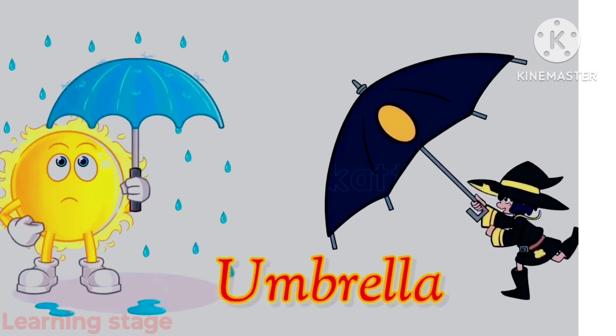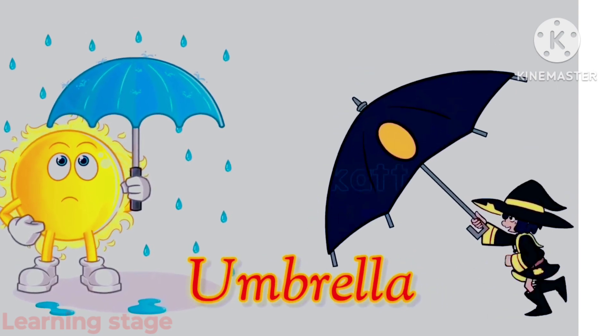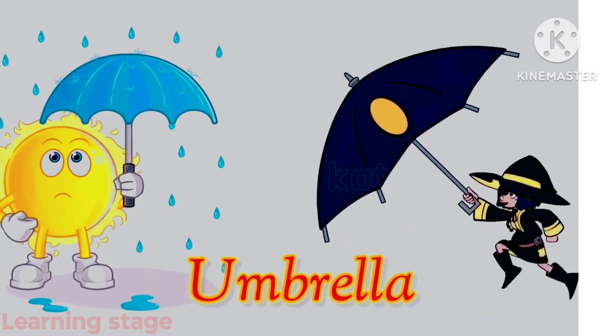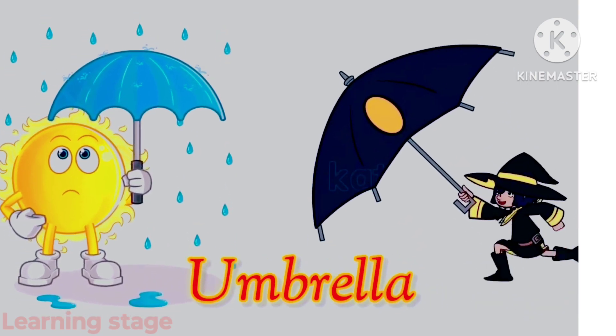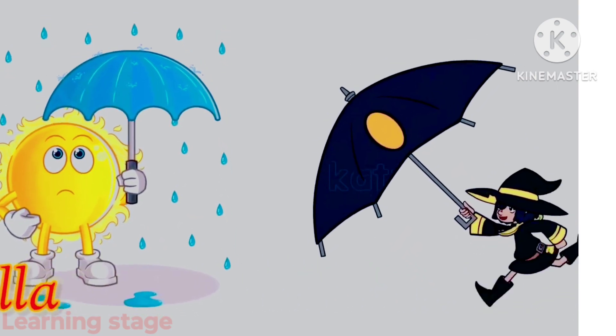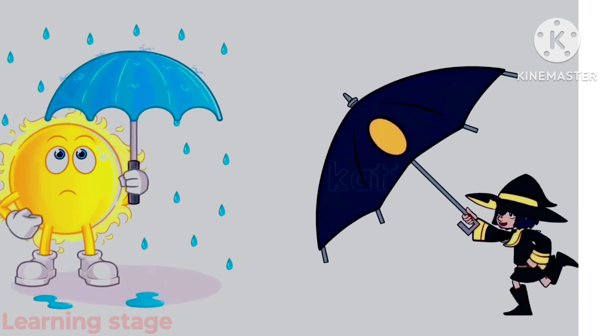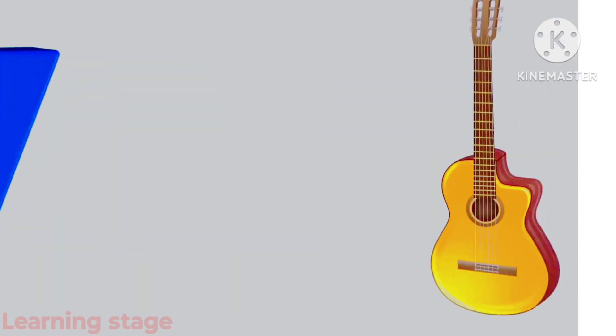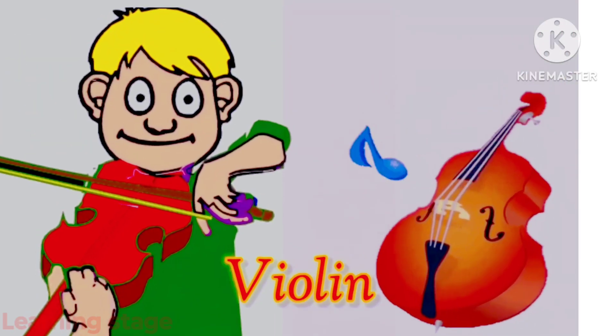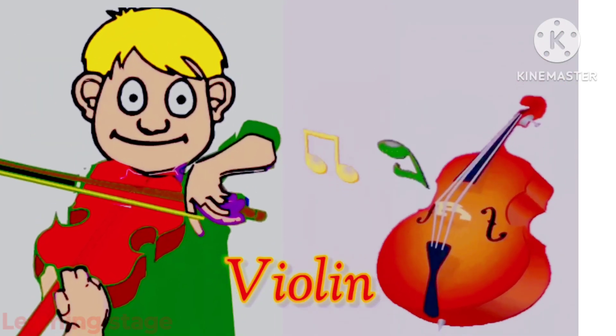U is for umbrella, umbrella. V is for violin, violin.